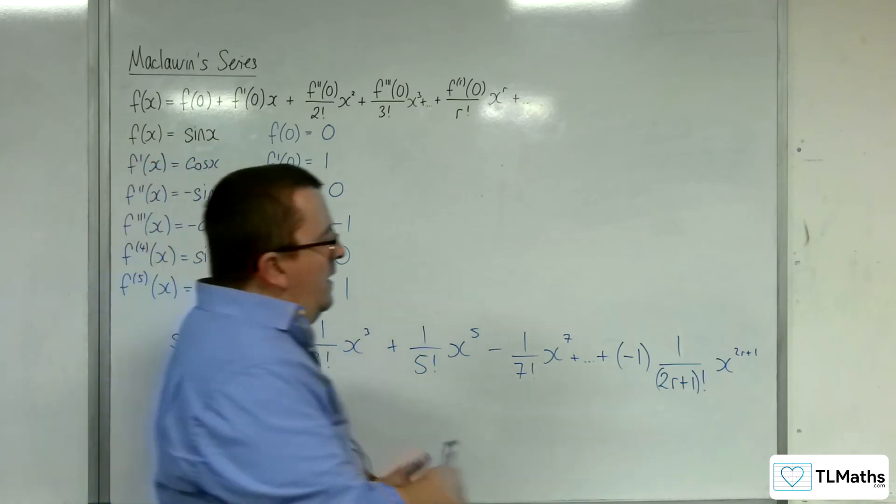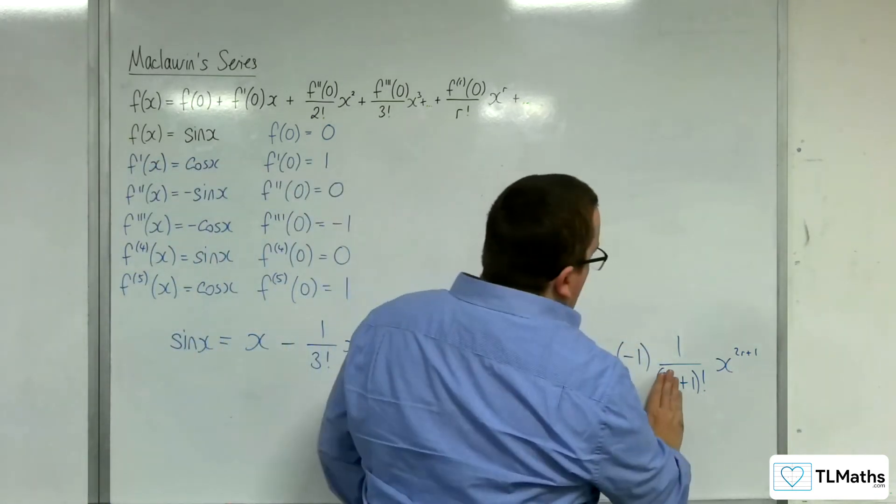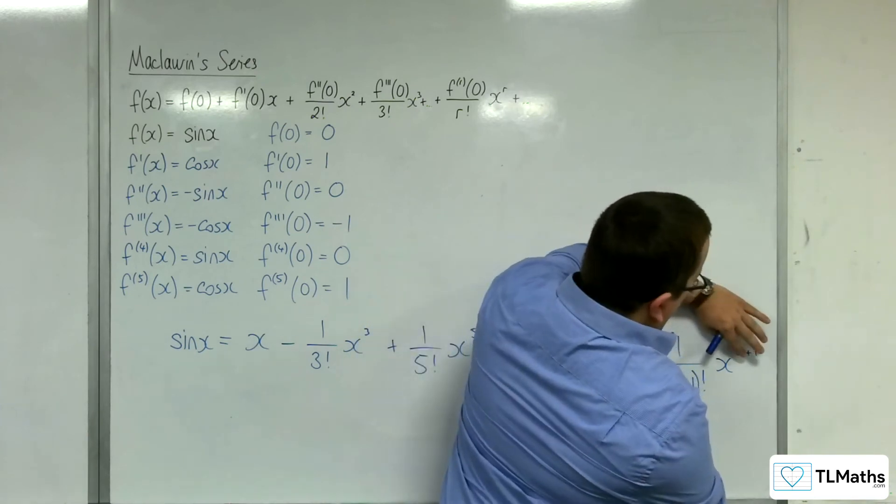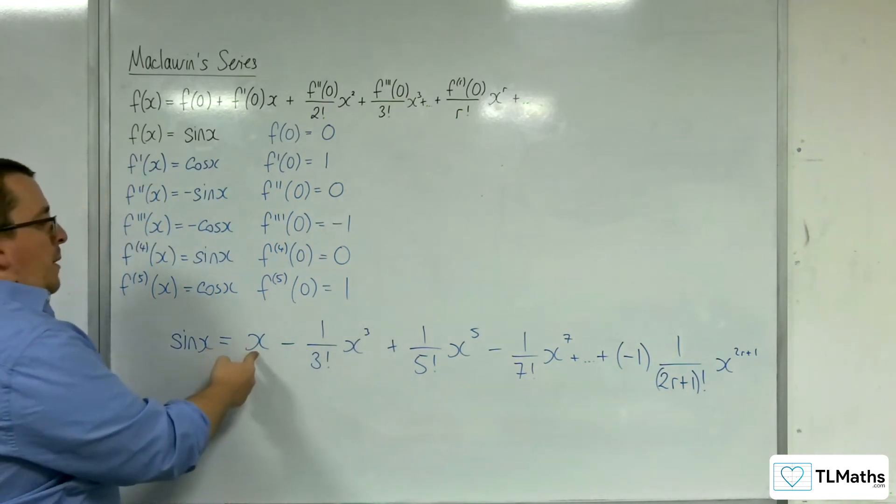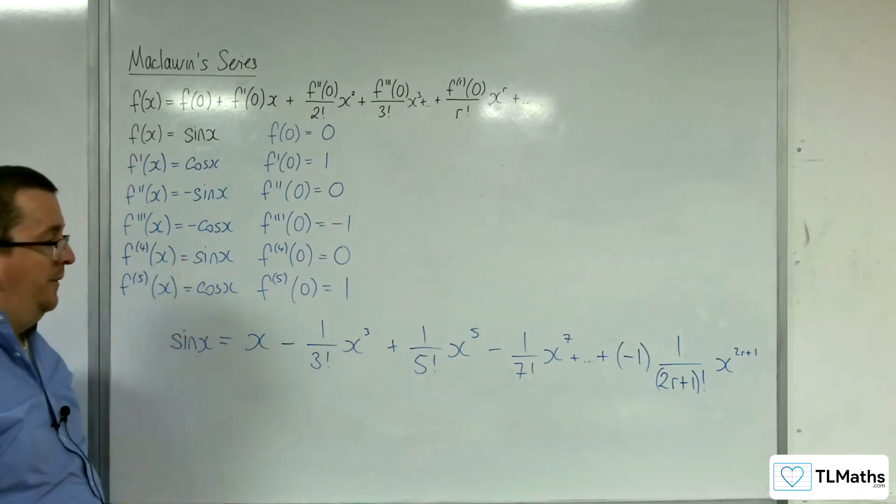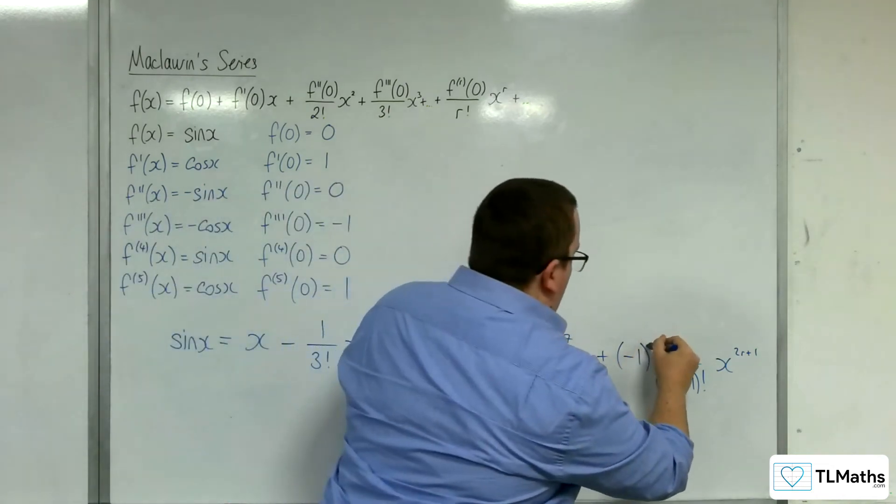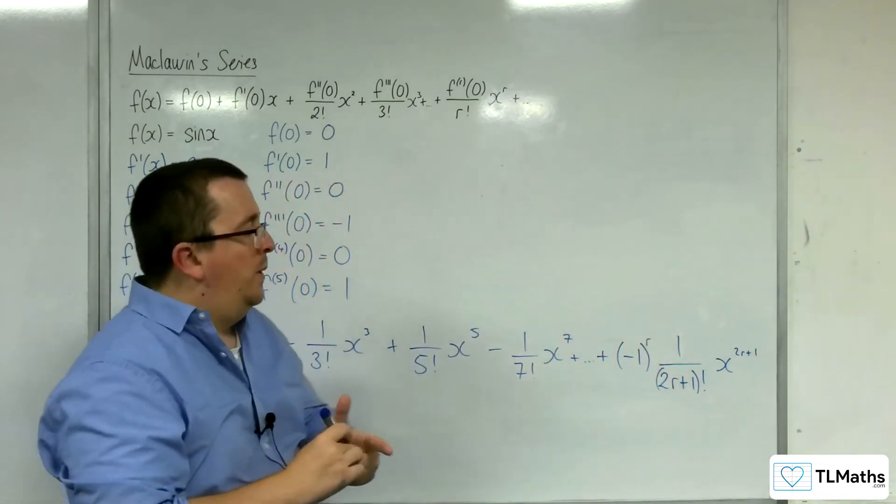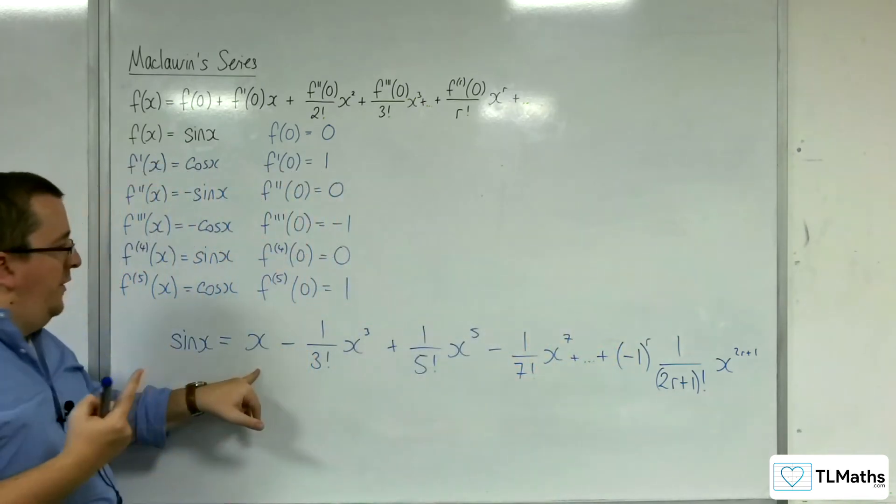So when r is zero, if r is zero, you're going to end up with one over one factorial times x to the one. But we want this to be positive. So if r is zero at that point, then minus one to the power of zero will give me one. And that will give me that term there.